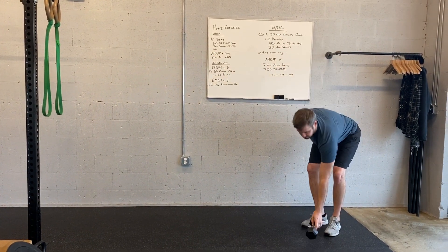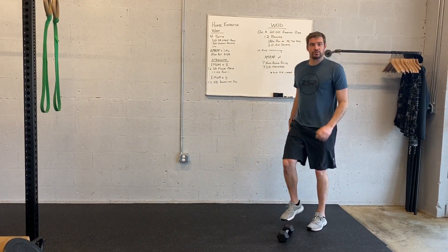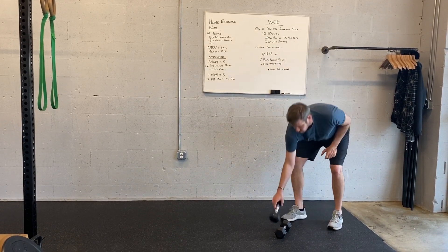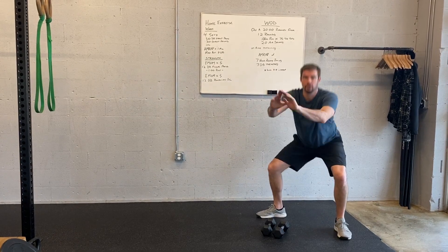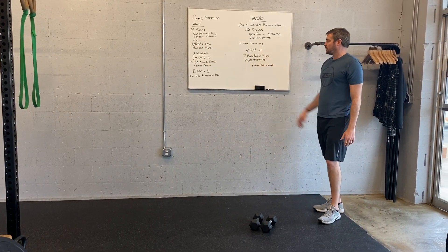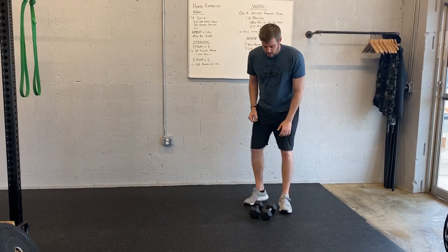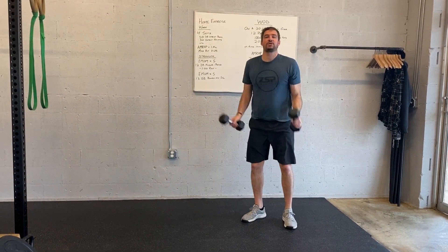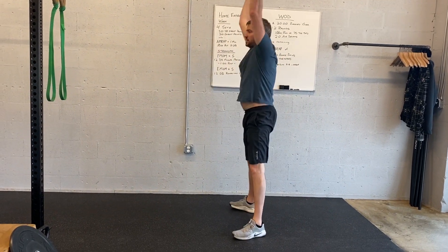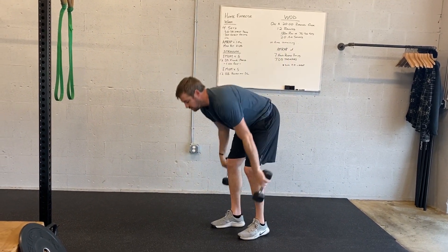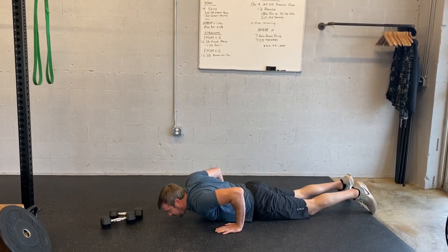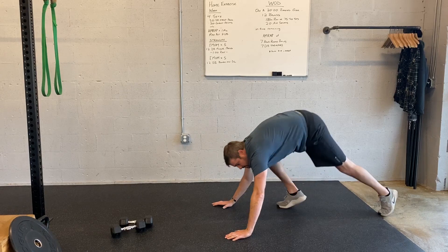Toe taps — we're getting used to this one. Air squats: pull yourself down, come back up, try to go parallel. And then hand release push-ups and thrusters. For thrusters: squat down, press up. For hand release push-ups: when you get to the bottom, lift the hands and press yourself out of it.